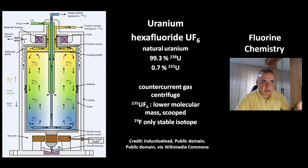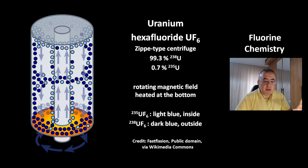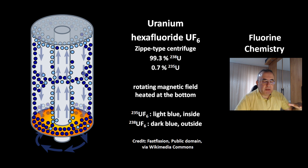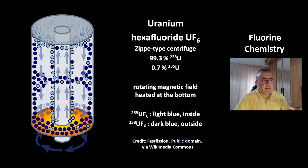This is a more sophisticated version called a Zippe-type centrifuge. It has a rotating magnetic field at the bottom. The heavier 238-UF6 molecules concentrate on the outside, shown in dark blue. At the same time, it is heated at the bottom, which pushes the lighter 235-UF6 molecules — shown in light blue — to the top, where they can be separated.